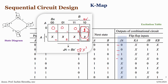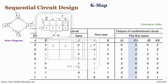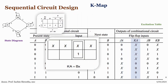Likewise for KA: filling the K-map, only cell seven is one — at position 1,1,1. Solving for that group gives the term BX, so KA equals BX.